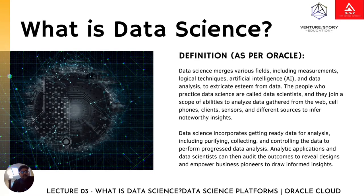Coming on to what is data science? As per Oracle, the definition is: data science merges various fields, including measurements, logical techniques, artificial intelligence, and data analysis, to extract esteemed information from the data. The people who practice data science are called data scientists, and they join a scope of abilities to analyze the data gathered from the web, cell phone data, clients, various sensors, and automation devices, and they generate load-worthy insights from them.